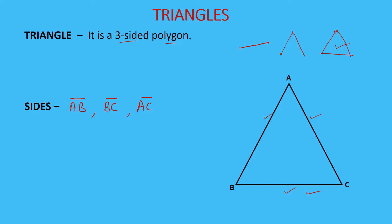How many angles are there in this triangle? There are three angles. Angle A — which can also be written as angle BAC or angle CAB. The second angle is angle B, which can also be written as angle ABC or angle CBA. The third angle is angle C, which can be written as angle ACB or angle BCA. So there are three angles in a triangle.